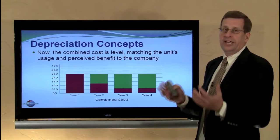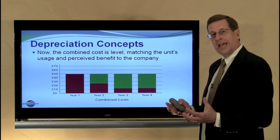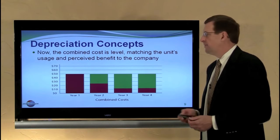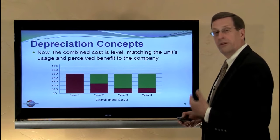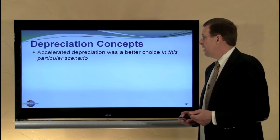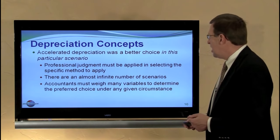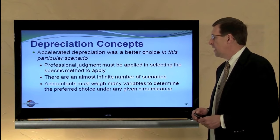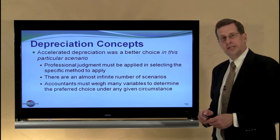Initially, straight line may seem logical, and it is indeed a popular method, but when you consider the total cost of utilizing an asset over its service life, there are justifications for alternative patterns of depreciation, which gives rise to these other methods considered in subsequent modules. In this case, accelerated depreciation was a better choice. Professional judgment must be applied in selecting the method to use, as there are almost an infinite number of scenarios and accountants must weigh many variables to determine the preferred choice under any given circumstance.